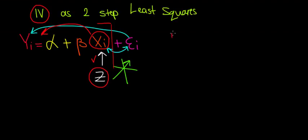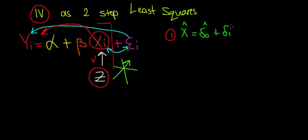Since there are two steps, let's start with step one. We're going to regress the independent variable on the instrumental variable. So we will have x regressed on a constant — let's call it δ₀, keeping α for later — plus δ₁, which is the slope coefficient in this case, times z. Z is the instrumental variable.